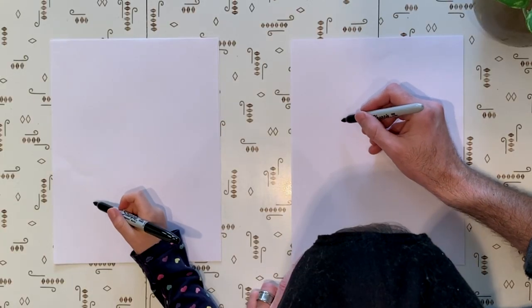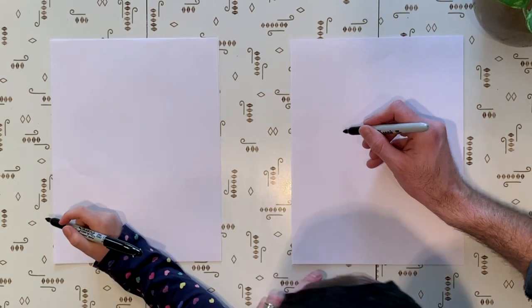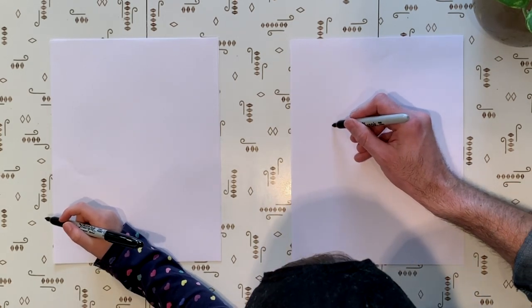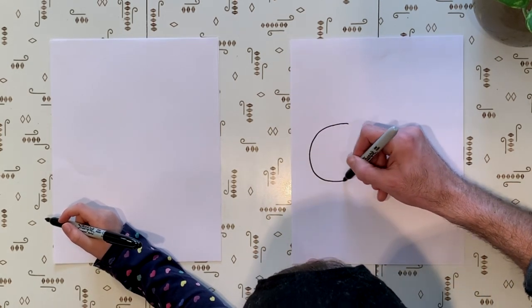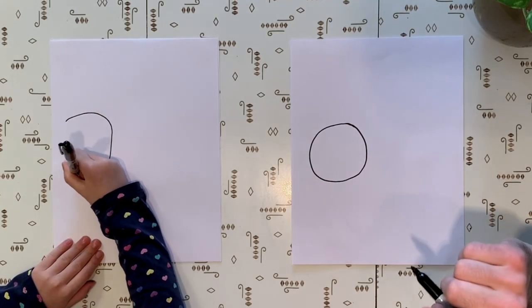So we are going to draw a super big circle right here, kind of middle, middle, middle of the page on the left. This is going to be the astronaut helmet.